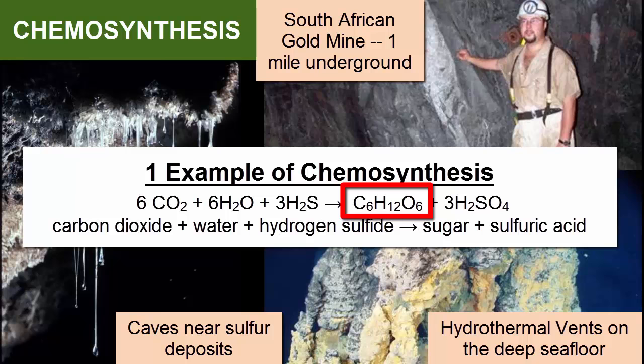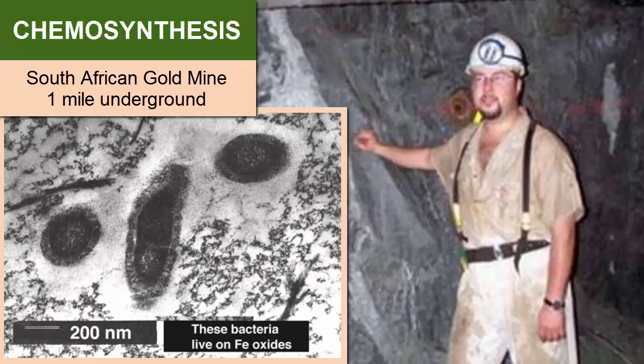Any of these locations could have been the cradles in which early life formed on Earth. In South African gold mines, in shafts nearly three kilometers underground, at temperatures as hot as 120 degrees Fahrenheit or 49 degrees Celsius, there are colonies of bacteria surviving without sunlight or oxygen, making their own food from energy stored in chemicals in the rocks like iron.